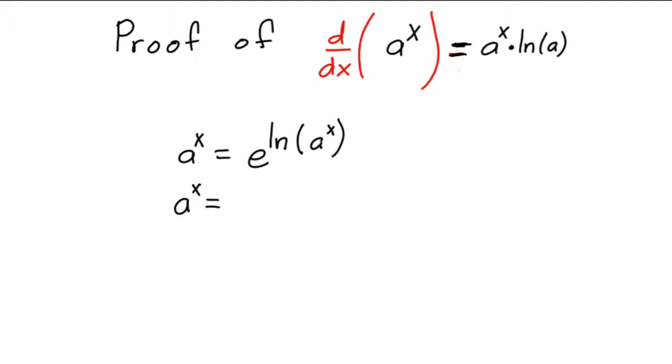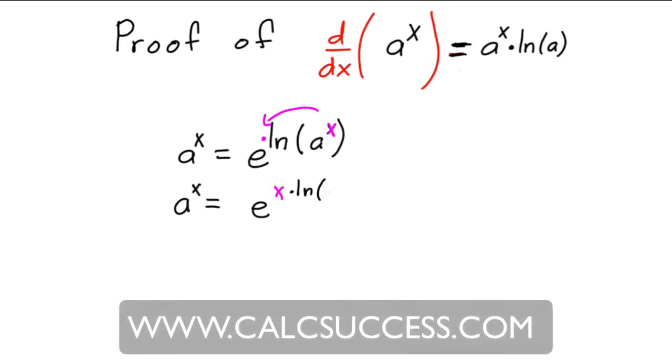this x can come out in front of the natural log, multiplying it. So you can get that a to the x is equal to e raised to the x times natural log of a.